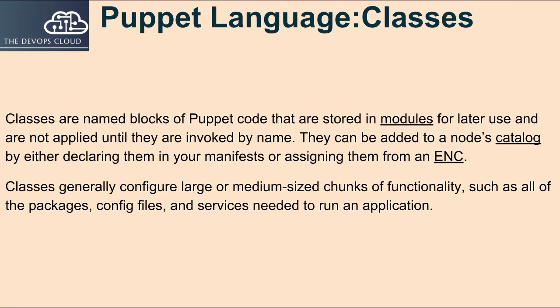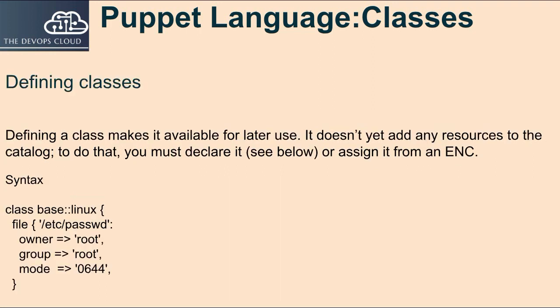Classes are named blocks of Puppet code that are stored in modules for later use and are not applied until they are invoked by name. They can be added to a node's catalog by either declaring them in your manifests or assigning them from an ENC. Classes generally configure large or medium-sized chunks of functionality, such as all of the packages, config files, and services needed to run an application. Defining a class makes it available for later use but doesn't yet add any resources to the catalog — to do that you must declare it or assign it from an ENC.